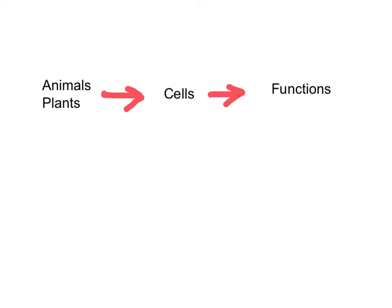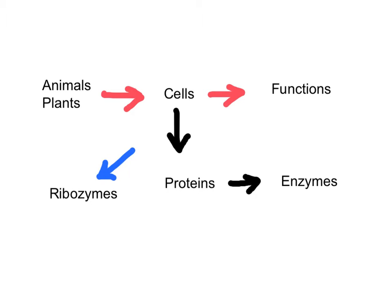Animals and plants are composed of numerous cells organized into different functional types. Each cell has thousands of proteins acting as catalysts. Those proteins are called enzymes.